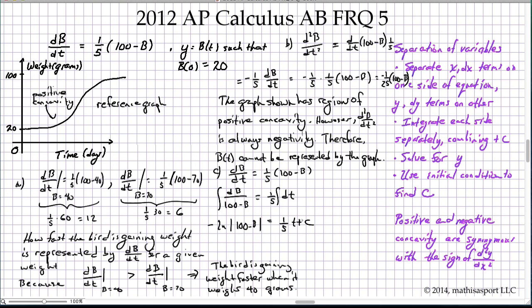Okay, we'll shift the negative sign to the other side just for simplicity. And then we'll exponentiate both sides. And we get that 100 minus B equals plus or minus e to the negative one-fifth t plus C.